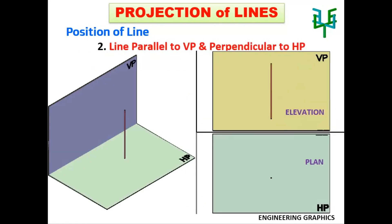In the next case: line parallel to VP and perpendicular to HP. Whenever a line is parallel to VP, we will have its true length in the elevation. The line is perpendicular to HP, so the line can be seen as a point in the plan.